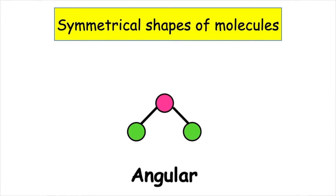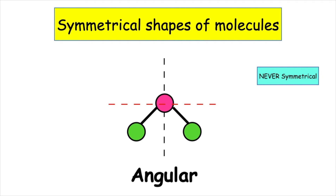Shape number two is angular. Along the x-axis we would never have a line of symmetry — it's not the same on either side of the line. However, we do have a line of symmetry along the y-axis, but because all of the molecule is not symmetrical, this is one of the shapes that will never be symmetrical.